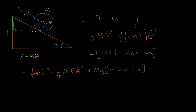In the last video we had the problem of a disk rolling down an inclined plane. To find the differential equation of motion we used the Lagrangian with an equation of constraint to eliminate theta, then put it in the Euler-Lagrange formula. In this video we are going to solve the same problem using a different method called the method of undetermined multipliers. It will seem like more work, but we will get something extra: the force of friction between the plane and the disk that causes the disk to rotate instead of just sliding down.